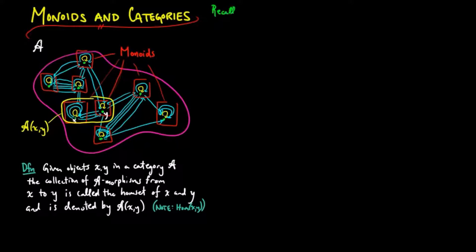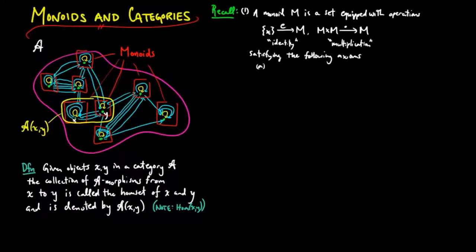We now recall the definitions of monoids and monoid actions. One, a monoid M is a set equipped with a nullary operation E, which means an element E in M, or equivalently a set map also denoted by E from a singleton set to M which picks out the element E, and a binary operation, denoted by a bullet, called multiplication.